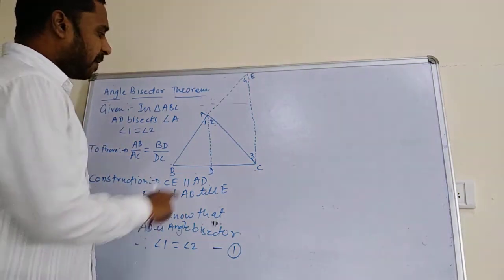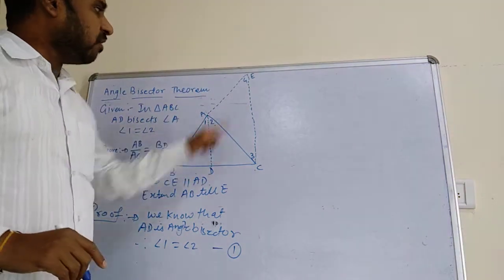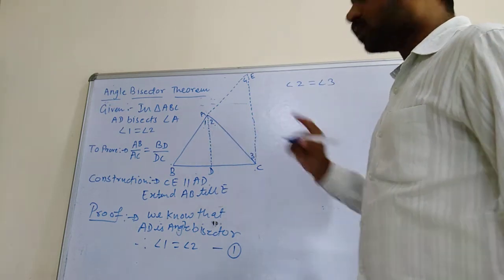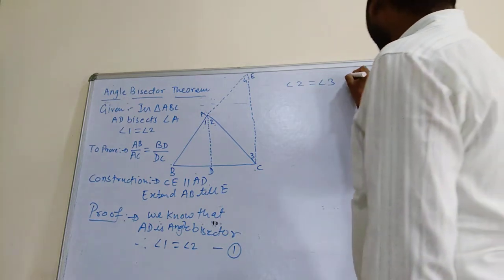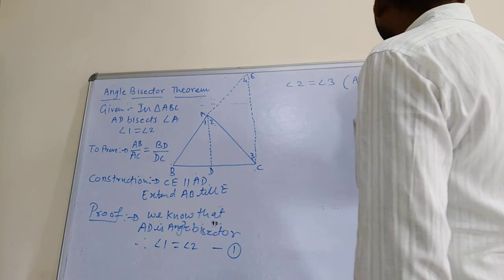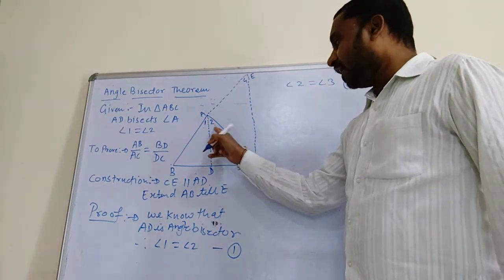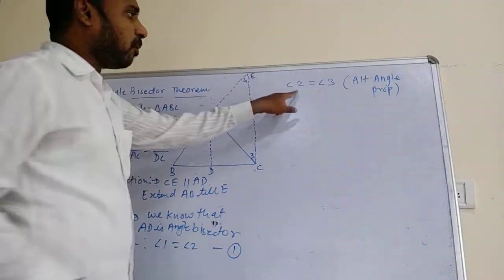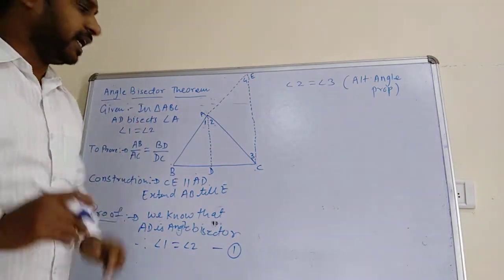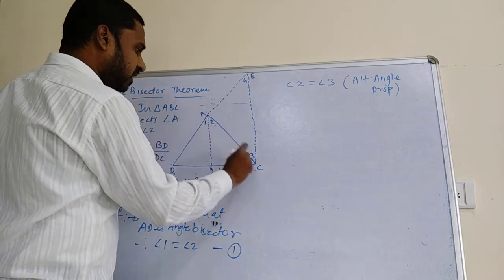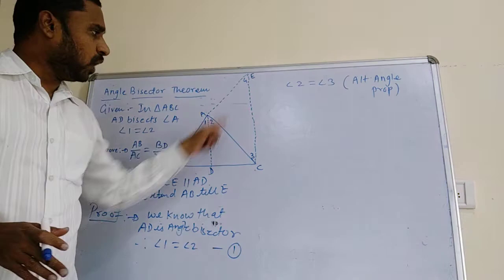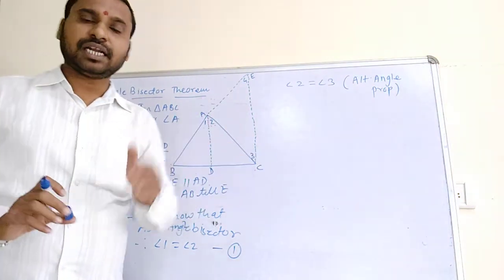Now, since AD is parallel to CE, you can write: Angle 2 is equal to Angle 3 — they are alternate angles. When lines are parallel, alternate angles are equal. There is a Z-formation between Angle 2 and Angle 3. Write this as Equation Number 2.